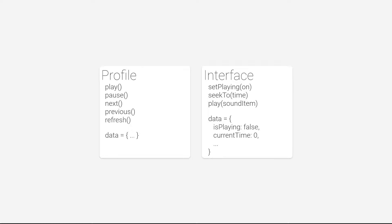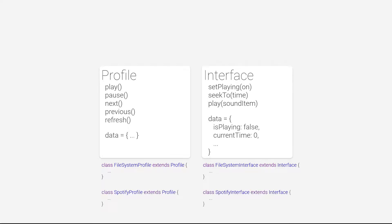Both of these could probably be combined, but at this point I'm just too lazy. Currently, there's just a file system implementation of each of these. But I've left some room to be able to add some interfaces for playing Spotify or other music services — it'll probably just act as a skin. The file system profile saves its data to a file on the local system formatted in JSON, while the file system interface plays audio from the local file system using the HTML5 audio element.